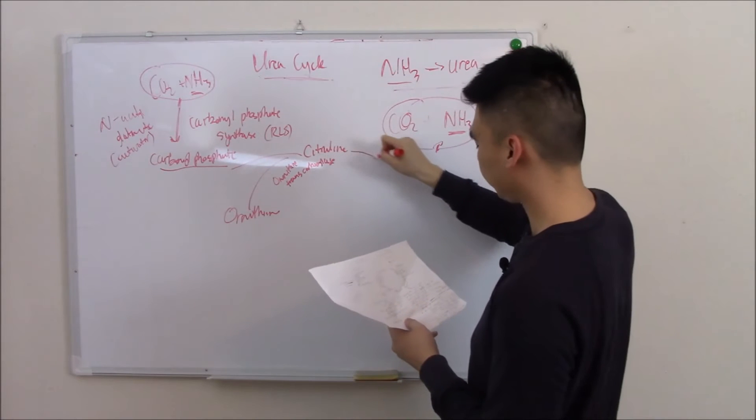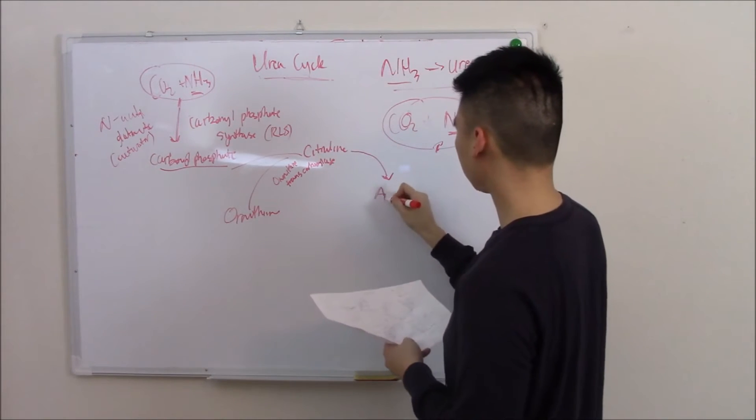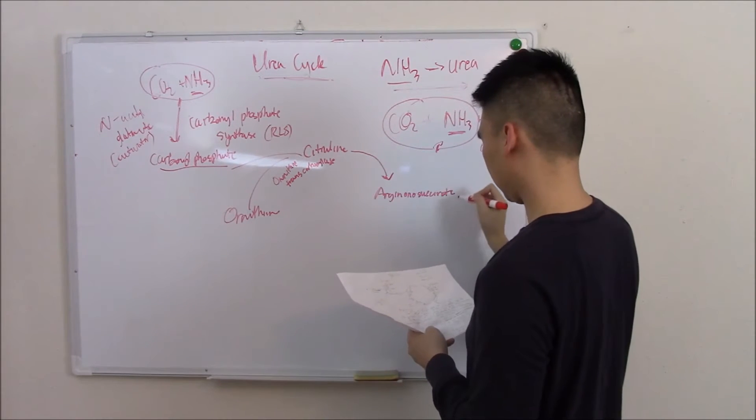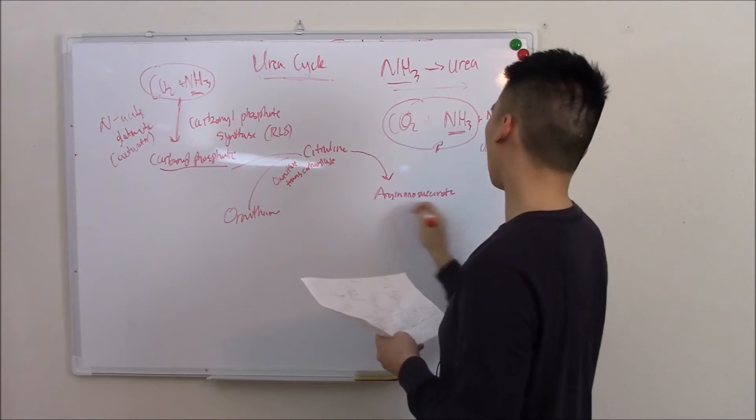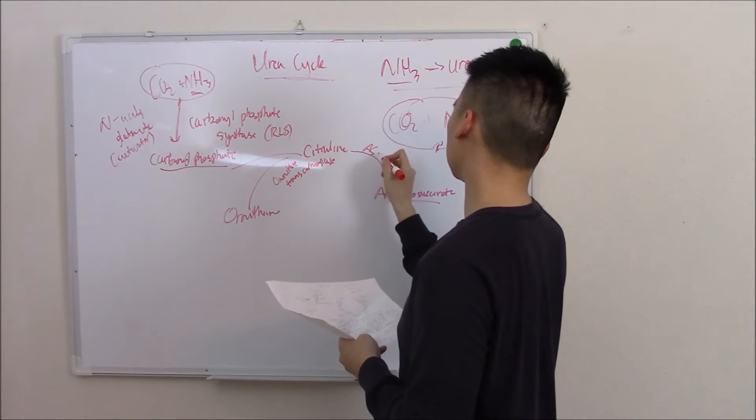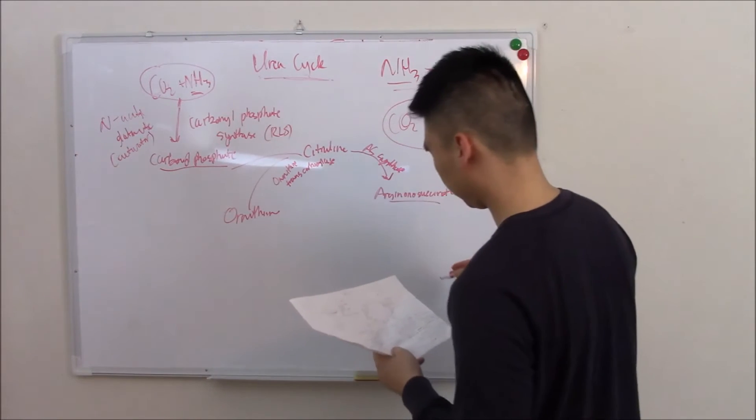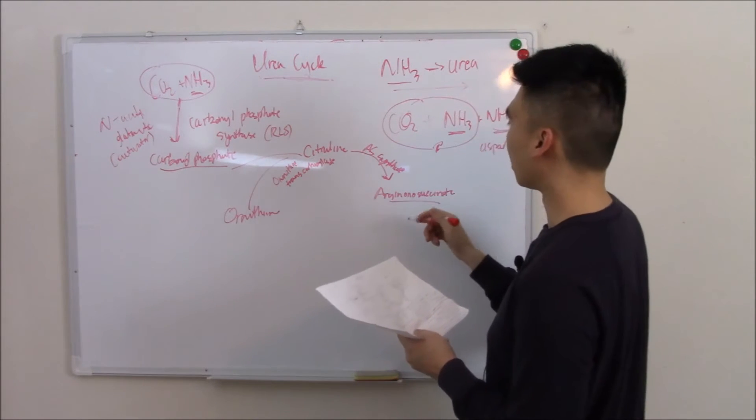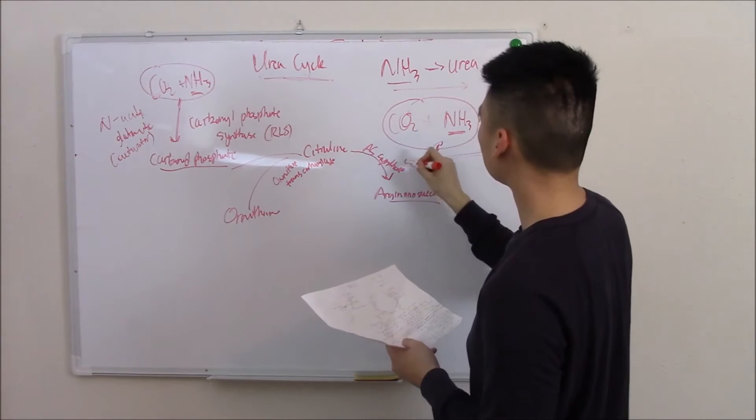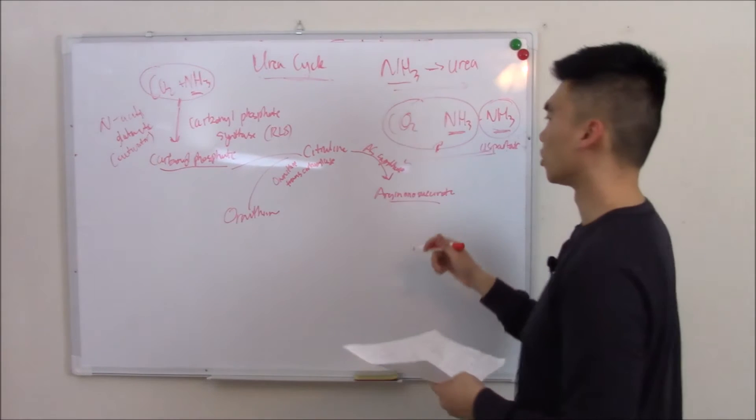Citrulline becomes argininosuccinate with the help of argininosuccinate synthase, and this is actually where aspartate comes in and contributes that last ammonia to make urea.